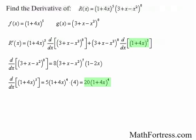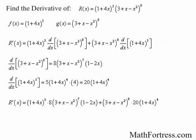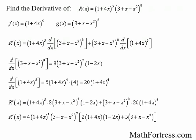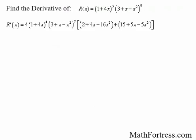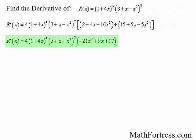Now that we have our derivatives, we can finish carrying out the product rule. We factor out a 4, the quantity 1 plus 4x raised to the power of 4, and the quantity 3 plus x minus x squared raised to the power of 7. Simplifying the expression and collecting like terms, the final derivative r of x is equal to 4 times the quantity 1 plus 4x raised to the power of 4 times the quantity 3 plus x minus x squared raised to the power of 7 times the quantity negative 21x squared plus 9x plus 17.